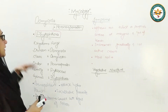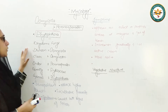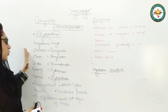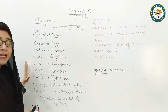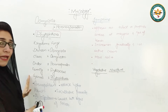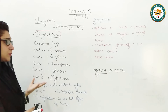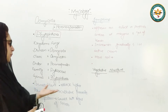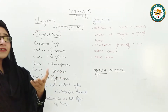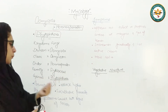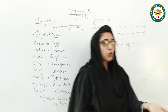Here we will see Phytophthora's systematic position. There is Kingdom Fungi, Division Oomycota, Class Oomycota, Order Peronosporales, Family Pythiaceae, and Genus Phytophthora. Cosmopolitan means widespread — it can be found everywhere. They attack higher plants, which are angiosperms and gymnosperms. These are facultative parasites, meaning they can live with or without hosts.